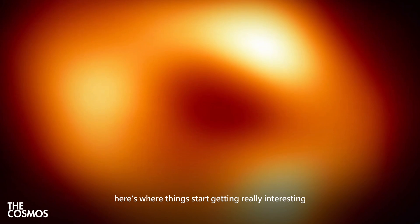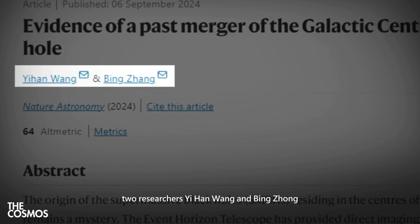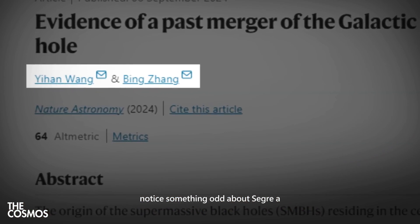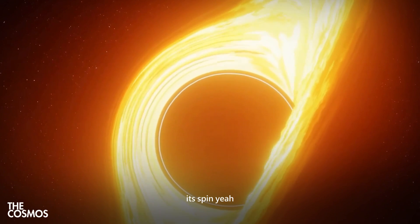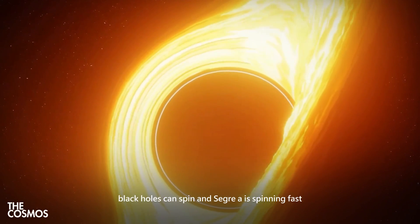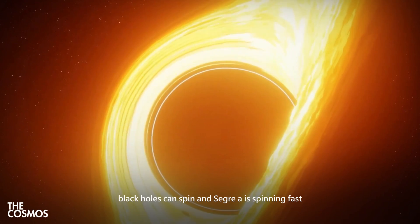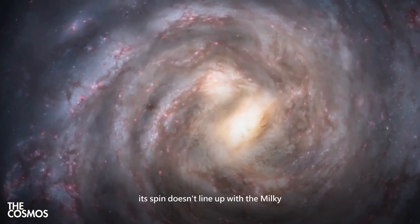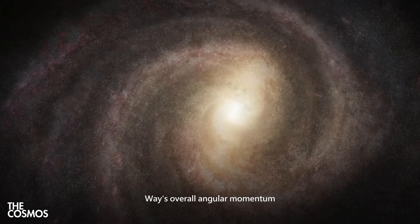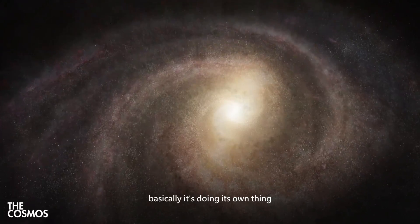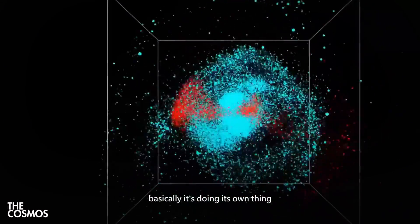Here's where things start getting really interesting. Two researchers, Yihan Wang and Bing Zhang, noticed something odd about SGRA. Its spin. Yeah, black holes can spin, and SGRA is spinning fast. But there's a twist. Its spin doesn't line up with the Milky Way's overall angular momentum. Basically, it's doing its own thing. And that's weird.